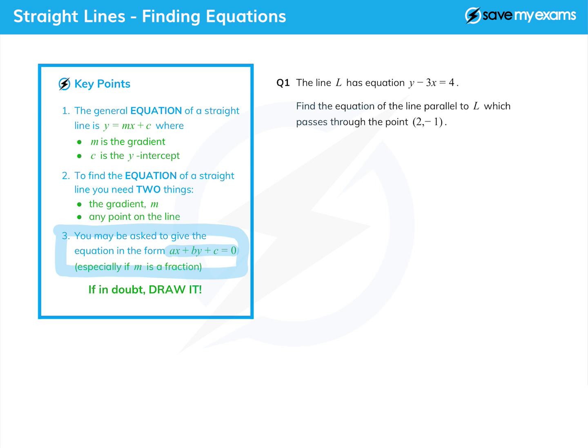We might be asked to give the equation in a different form, ax + by + c = 0, where a, b and c are integers. That normally happens when the gradient is a fraction. As ever with geometry questions, if in doubt, draw it.